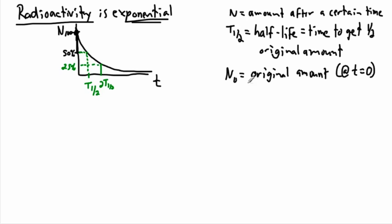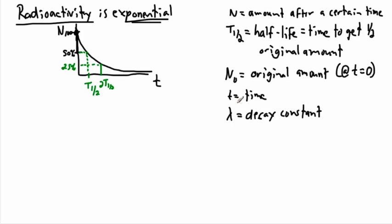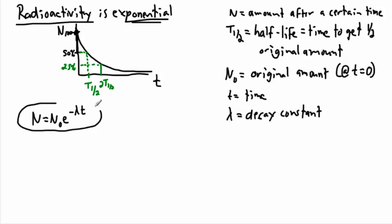We're going to define t as the time elapsed, and lambda as the decay constant — it tells you the probability of the particle decaying each second. By the way, the symbol lambda is also the logo of the video game Half-Life! The equation governing radioactivity is n equals n₀ times e to the minus lambda t.